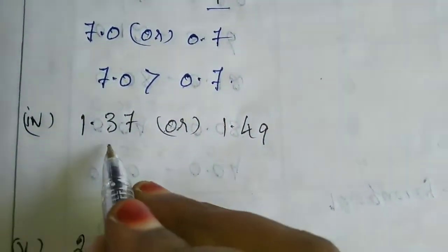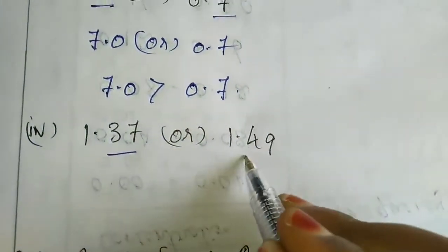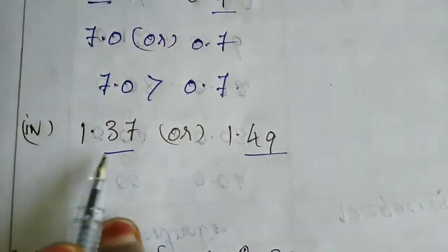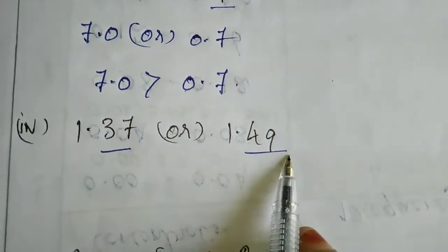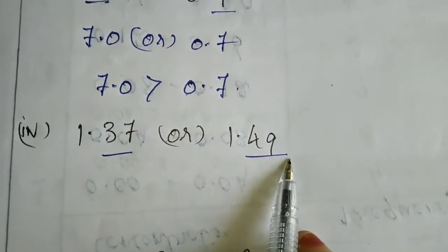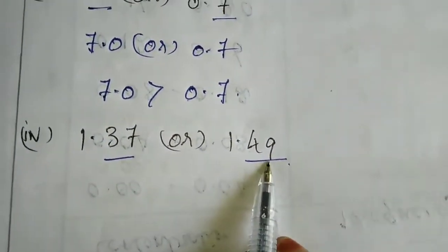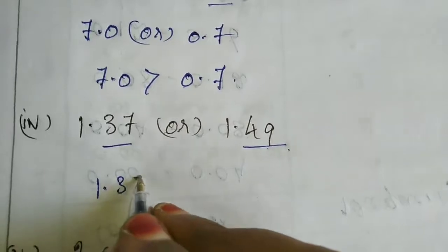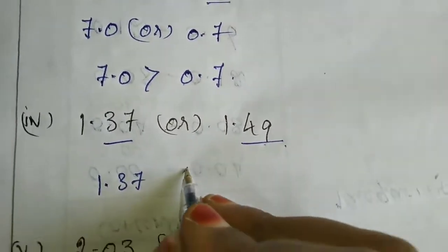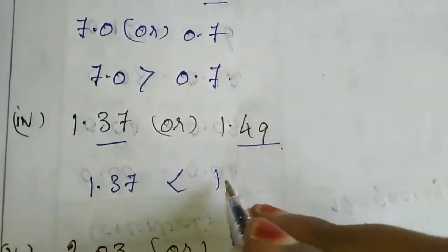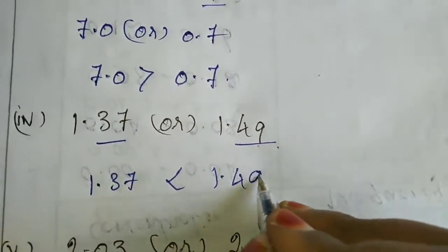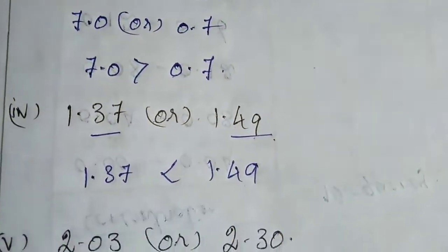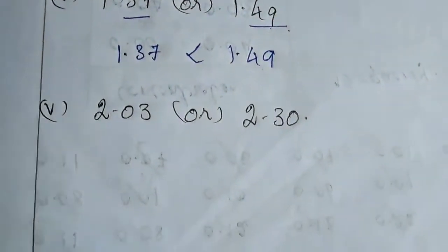Now this one — here also two digits, here also two digits. 1.37 or 1.49, which is greater? 1.49. So 1.37 is lesser than 1.49, meaning 1.49 is the greater number.